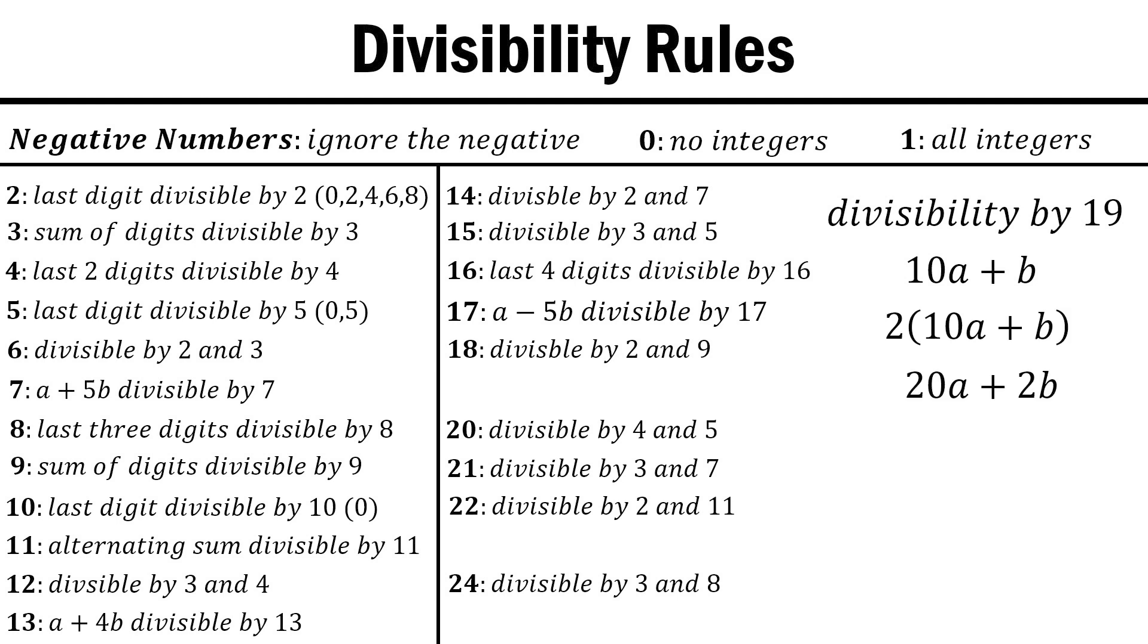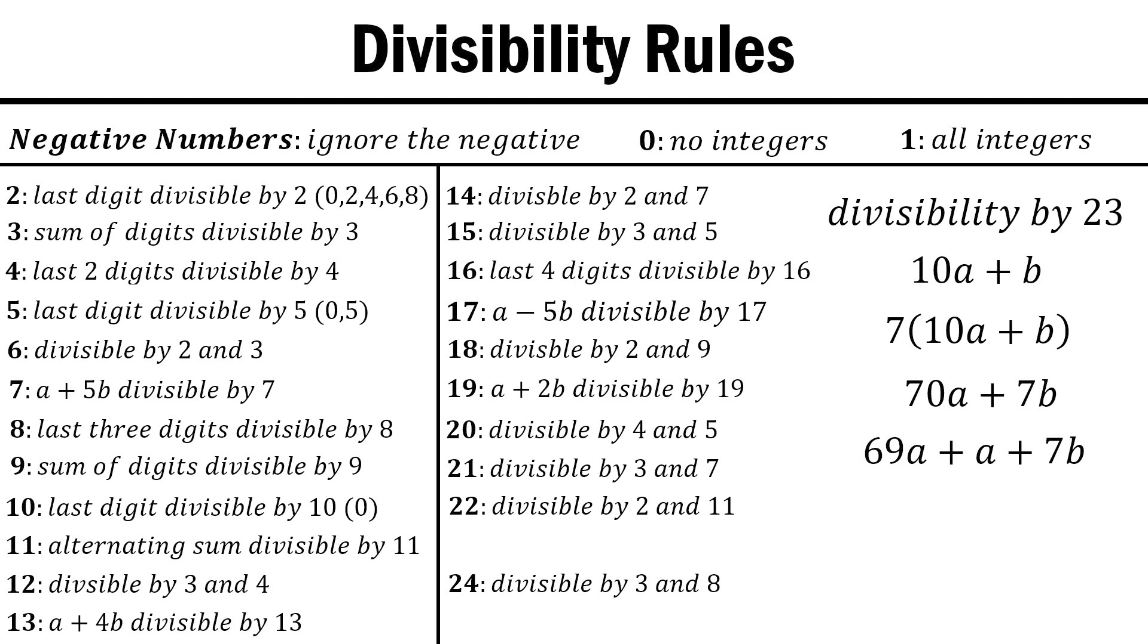By now you can probably see where I'm going with this. We split it into 19a plus a plus 2b, and obviously 19 divides 19a, so we only have to check a plus 2b. And for the last of our primes, for 23 we multiply 10a plus b by 7 to get 70a plus 7b, which we turn into 69a plus a plus 7b, which we can show leaves us with a plus 7b as our rule.